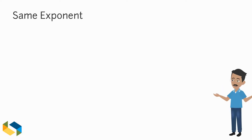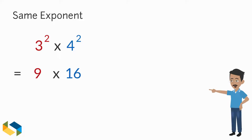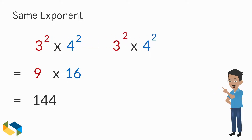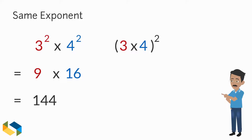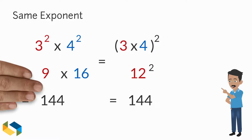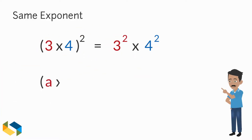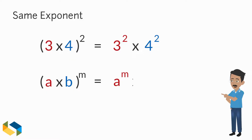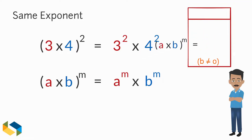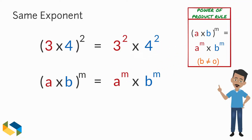Now let's introduce another base variable, keeping the same exponent value: 3 squared multiplied by 4 squared. The result is 9 multiplied by 16, which is 144. But if we multiply 3 by 4 first and then apply the exponent, we have 12 squared, which is also 144. So A times B raised to the power M equals A raised to the power M times B raised to the power M. This proves the power of the product rule.